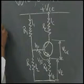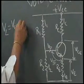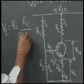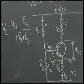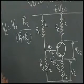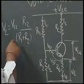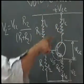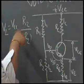V2 is equal to Vcc × R2 / (R1 + R2). So this is the voltage here. And importantly, this V2 is independent of the collector current IC. If the collector current changes, V2 will not be affected, because IC does not appear in this expression.